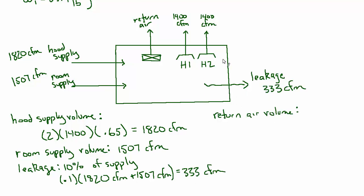And then the return air we can just figure out from the balance since that's the only one we don't know. It's going to be total supply minus the hoods and the leakage. So 1820 plus 1507 minus 2 times 1400 minus the 333 equals 194 CFM. So that's this.